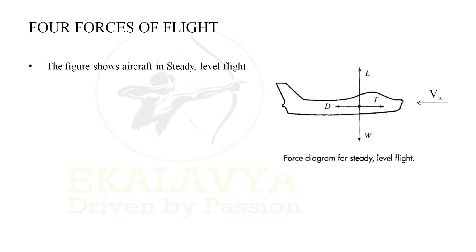Let us consider an aircraft in steady level flight as shown in the figure. Steady flight is one where acceleration is zero, or one with constant velocity. Level flight is one where the inclination angle of the flight path with the horizontal is zero. Overall, steady level flight is one in which the aircraft moves with constant velocity — that is, zero acceleration — and horizontal to the earth's surface.